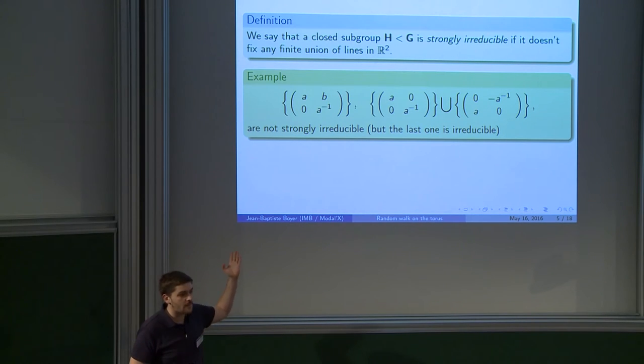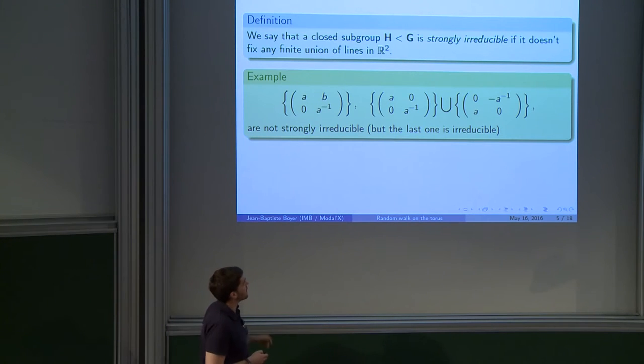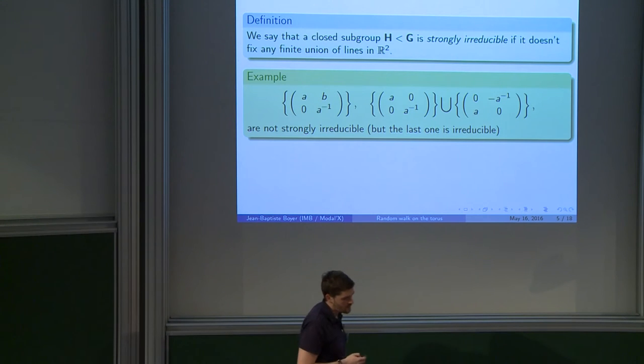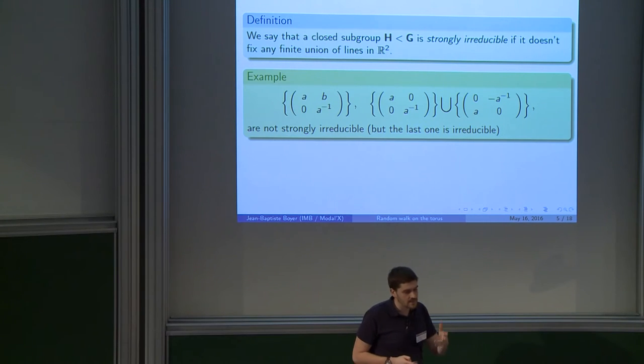And obviously, if you conjugate these examples by any matrix in SL₂(R), you are still in this example. And you can do the same thing with three lines and so on. And I will not want that for my measures.